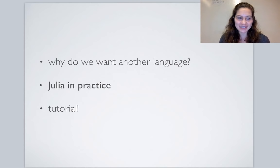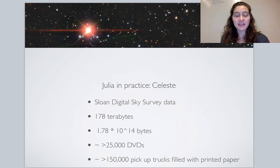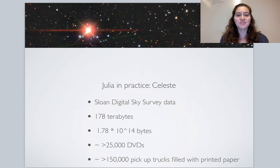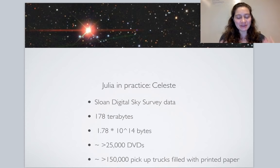A quick application of Julia in practice: the Celeste project. It took data from the Sloan Digital Sky Survey, which collected data on about 35% of the visible sky — roughly 178 terabytes, or 1.78 × 10¹⁴ bytes. To put that in perspective, it would take over 25,000 DVDs to store that data, and if you printed it all, you'd need more than 150,000 pickup trucks to carry the paper.